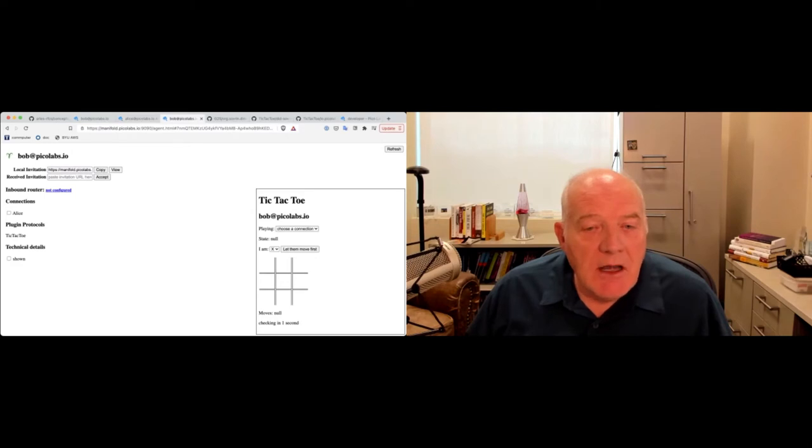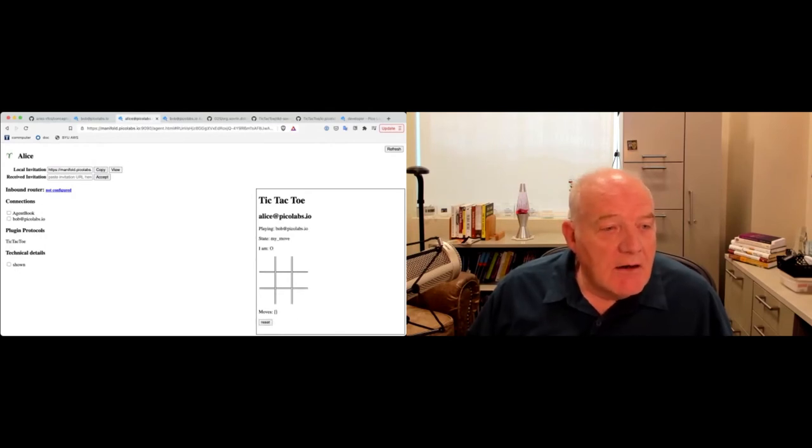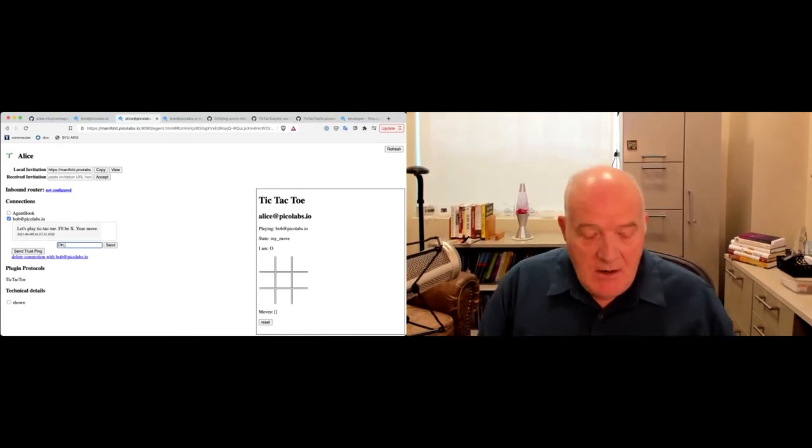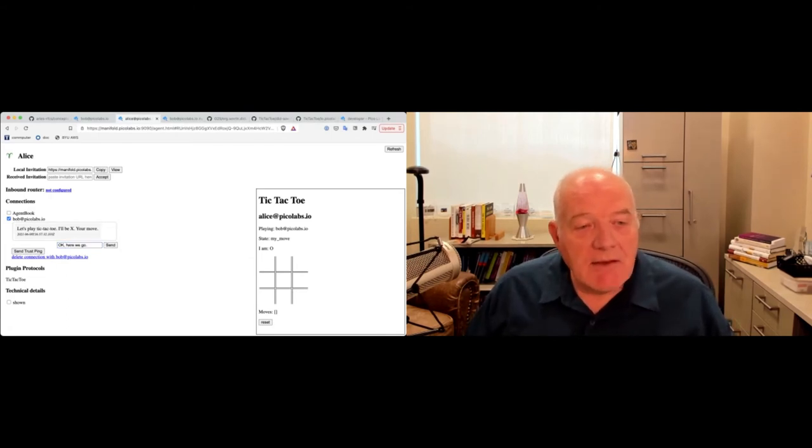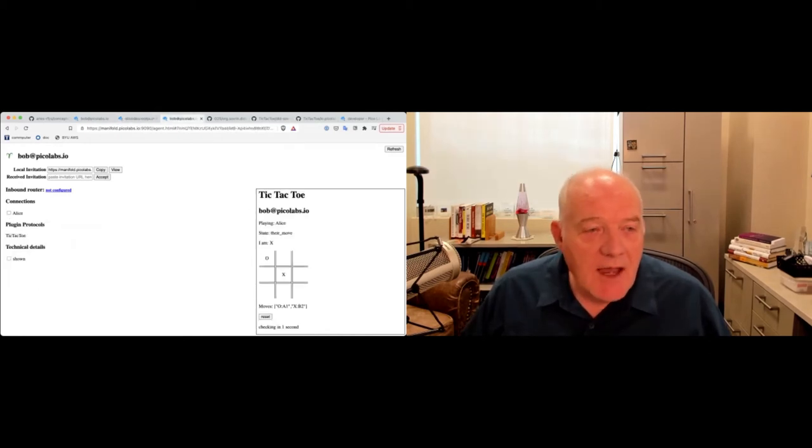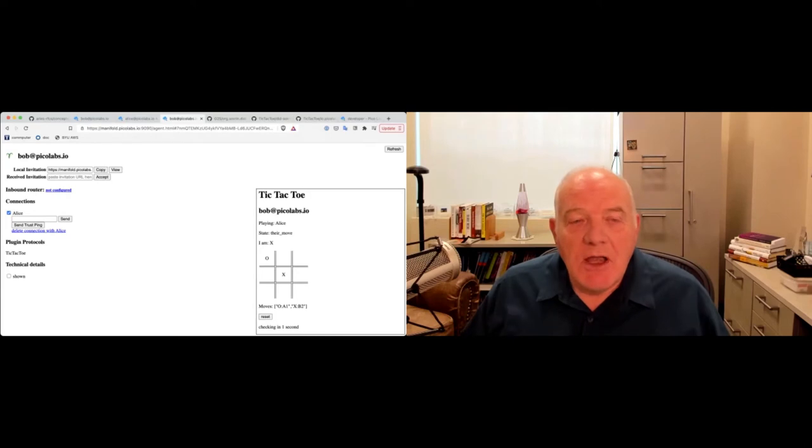Bob is going to start a tic-tac-toe game with Alice. He's going to say I'm X and he's going to let them move first. So now Bob is in this game. If we come over to Alice and look at her connections with Bob, you can see that she has a message from Bob: 'Let's play tic-tac-toe. I'll be X.' And she could say, 'Okay, here we go.' She's just sending that message to Bob, but she's going to come over here and click O. And if we go over to Bob, he sees O, he clicks X, and so on and so forth. We can see that he saw her messages and is playing tic-tac-toe via the protocol. So it's just a simple demo to show that these agents can have protocols put on top of them.